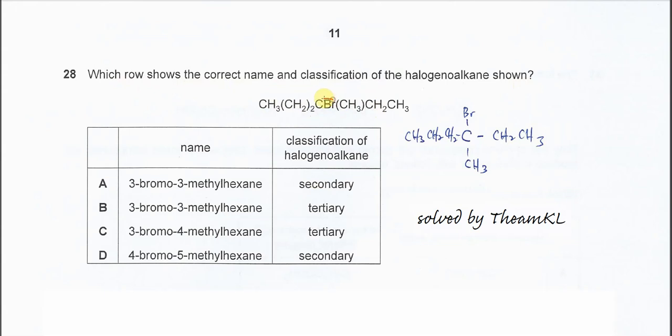This is the bromine bonded to this carbon. I'll try to draw the structure out for you to know how many alkyl groups are bonded to the carbon with bromine.